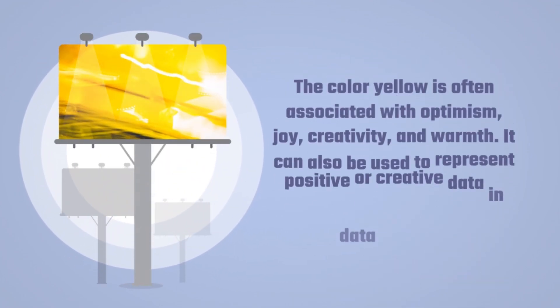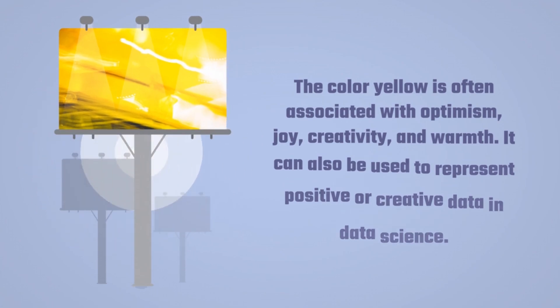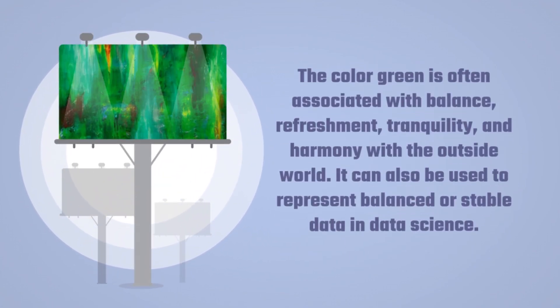The color yellow is often associated with optimism, joy, creativity, and warmth. It can also be used to represent positive or creative data in data science. The color green is often associated with balance, refreshment, tranquility, and harmony with the outside world. It can also be used to represent balanced or stable data in data science.